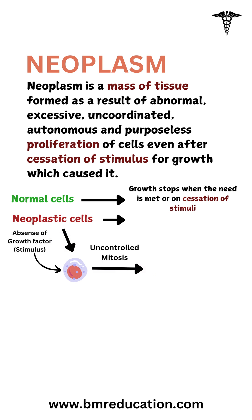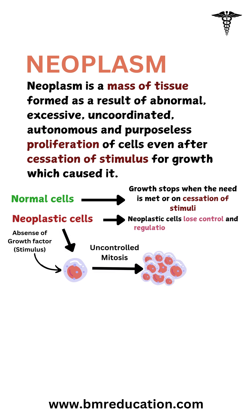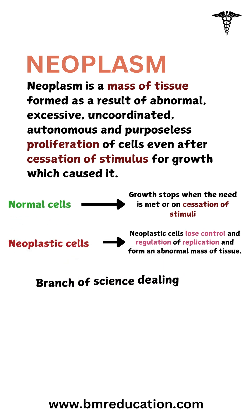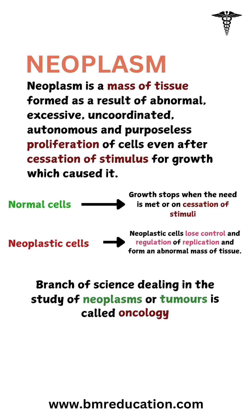On the other hand, neoplastic cells lose control and regulation of replication, forming an abnormal massive tissue. Even if whatever triggered the growth is gone, the growth continues. The branch of science dealing with the study of neoplasms or tumors is called oncology.